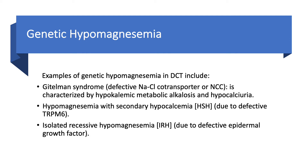Hypomagnesemia with secondary hypocalcemia (HSH) is due to defective TRPM6 — this is also rare. Isolated recessive hypomagnesemia (IRH) is due to defective epidermal growth factor, and this is also very rare.